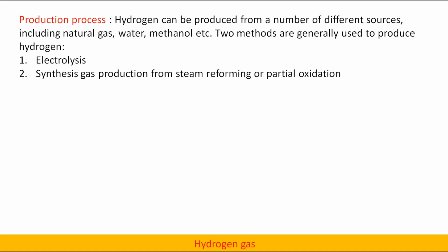Hydrogen gas. Production process: Hydrogen can be produced from a number of different sources including natural gas, water, and methanol. Two methods are generally used to produce hydrogen: 1. Electrolysis, and 2. Synthesis gas production from steam reforming or partial oxidation.